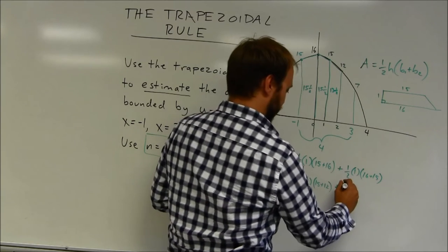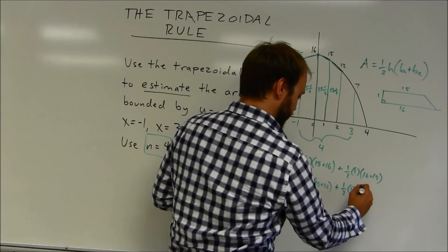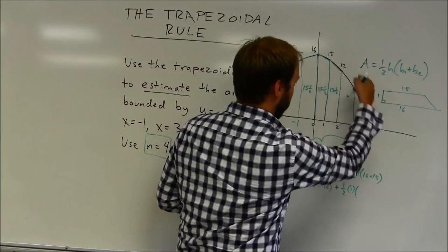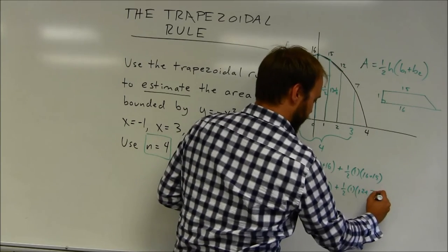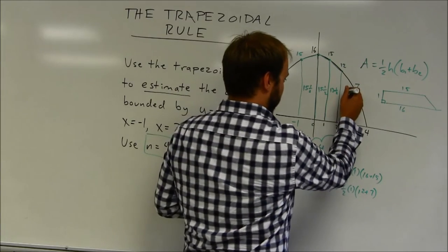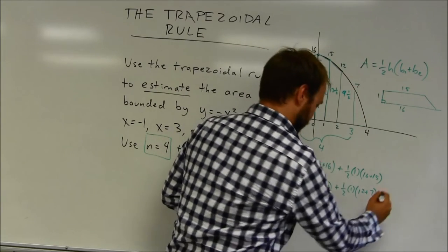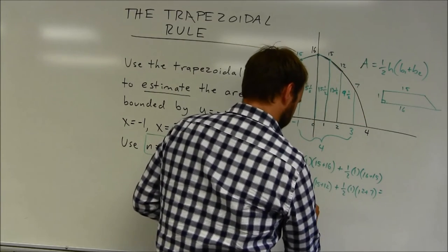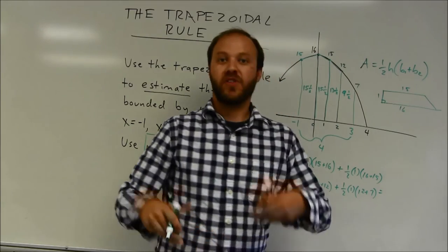And then finally, my last trapezoid, half the height of 1 times the sum of the bases. Bases are 12 and 7. And so it's going to be half of 19. That's going to be 9 and a half. And when you add those together, you're going to get 54 square units.